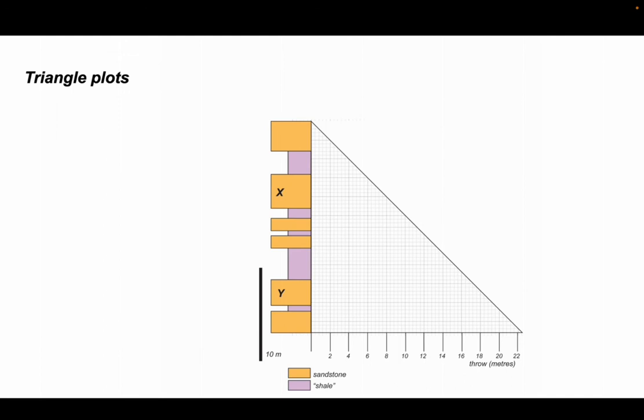We'll start by constructing a triangle plot that will look at the juxtapositions of the various sandstones and shales and how they vary with throw on a fault. On the triangle plot, I put the stratigraphy up the vertical axis and on the horizontal axis I've labeled the throw.